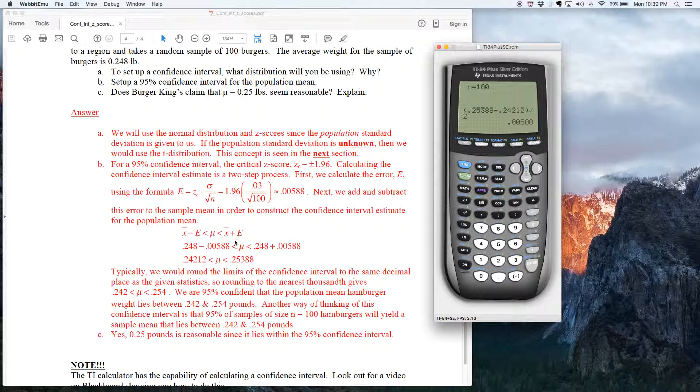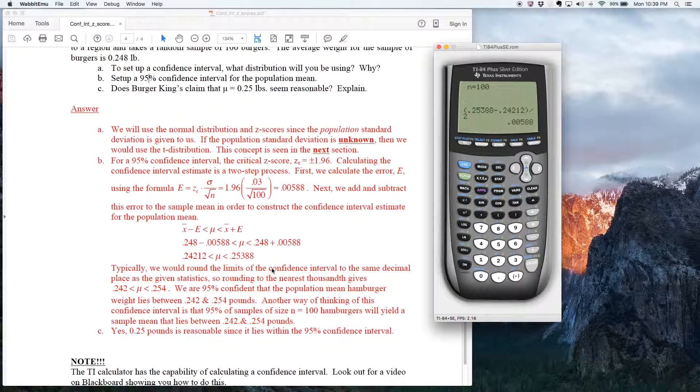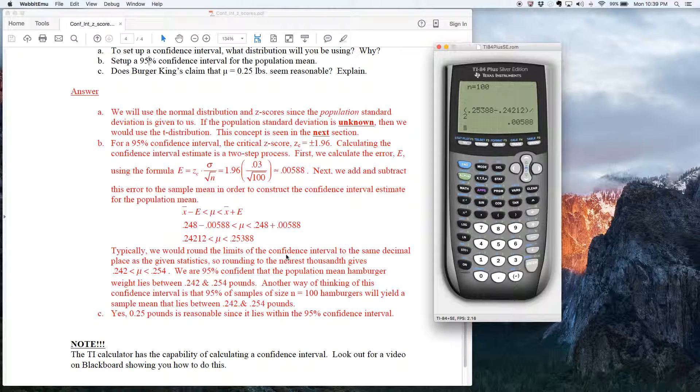Obviously, if their number landed outside of the confidence interval, then you would say no, their number does not look reasonable. So really the point of this video is just to show you how to use the calculator to crunch this confidence interval and to get the error out of it. It's a pretty easy concept.